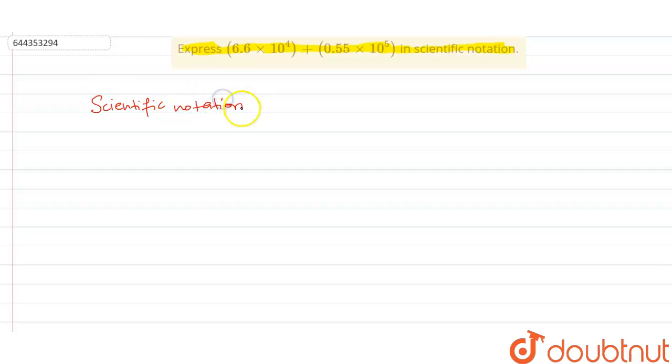Scientific notation is nothing but a notation which is having a value like this, where x represents a single value—it may be in decimal as well—and where y represents the exponent.